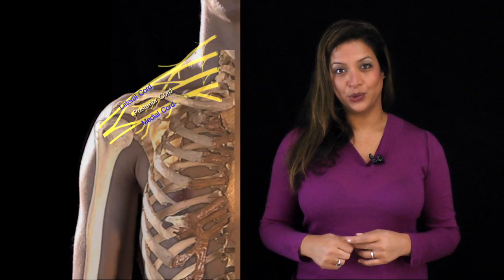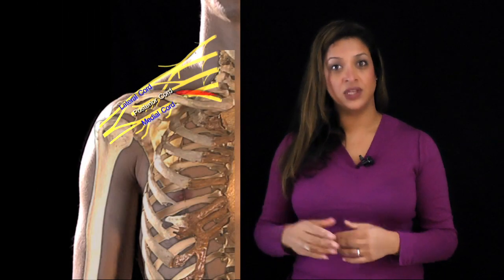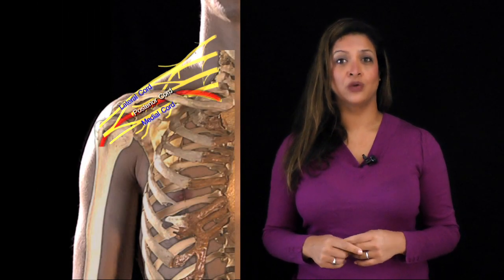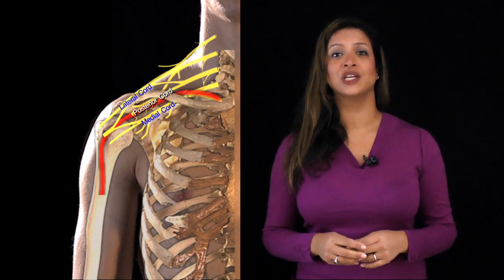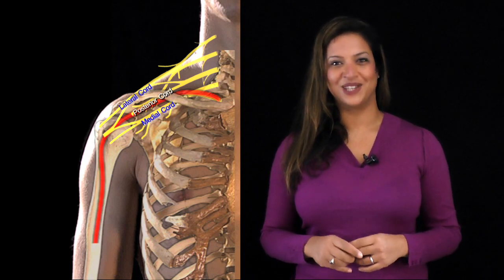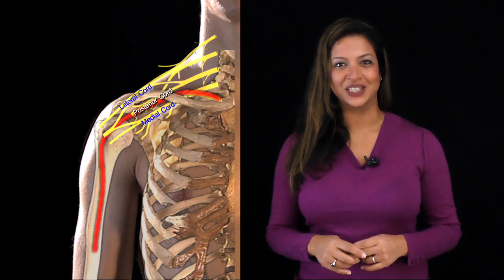The cords are called lateral, posterior and medial because of their relationship to the axillary artery — the lateral cord lies lateral to the axillary artery, the posterior cord posterior to it, and the medial cord medial to it.